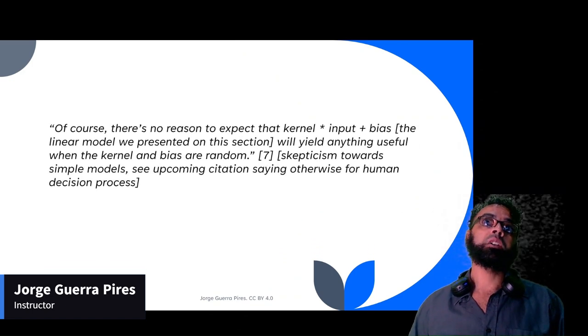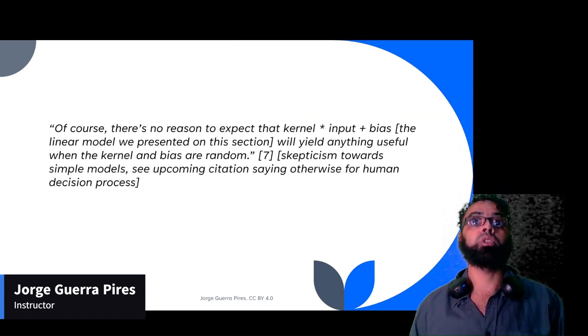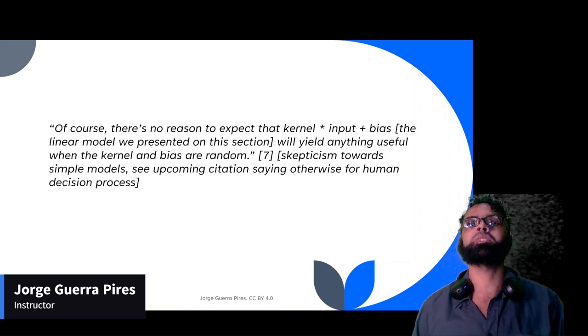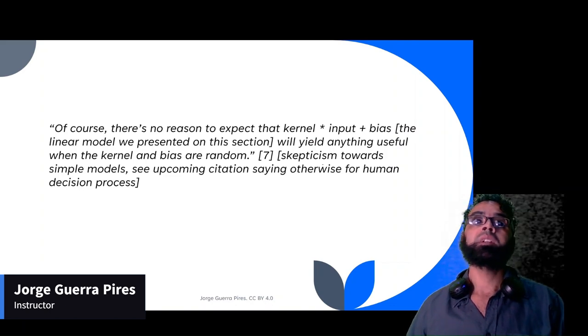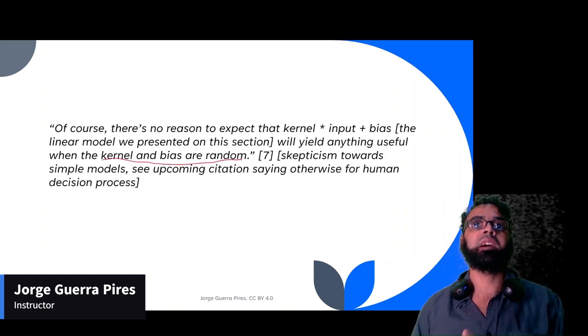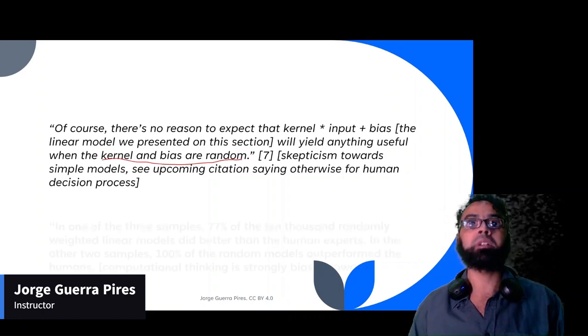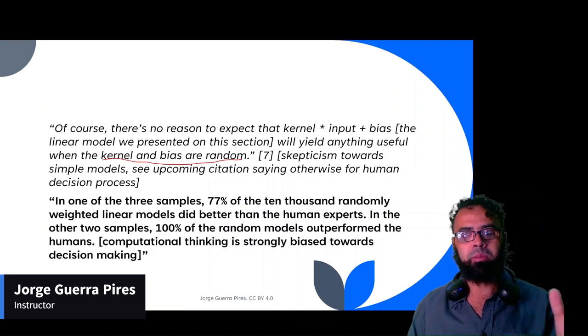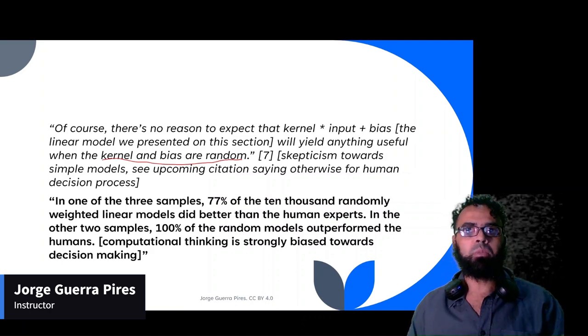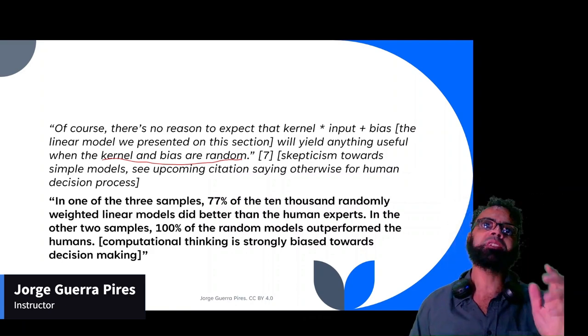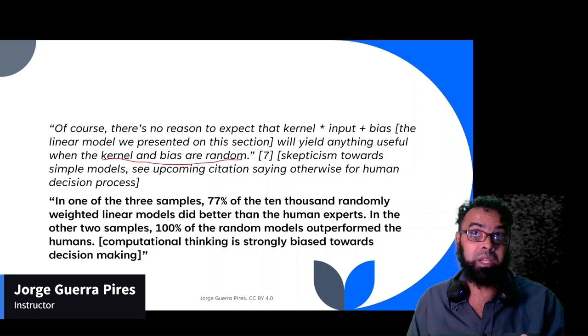From the TensorFlow.js book, I found this part interesting. They say there's no reason to expect that a kernel plus input plus bias will yield anything useful when the kernel and bias are random. They're talking about how neural networks start with random initialization. However, the work of Daniel Kahneman showed the opposite. I'm talking about decision processes, when you use a model to make a decision. He showed that when a human is making a decision, even a random model can be better than a human, which is quite surprising.